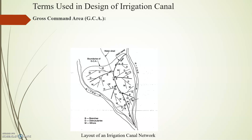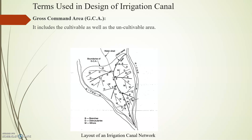The first basic concept is Gross Command Area (GCA). Here you can see the main canal taken from a river, with branches, distributaries, and minors shown in this figure. The application and purpose of GCA and related terms is that they help us decide what the capacity of a canal should be.